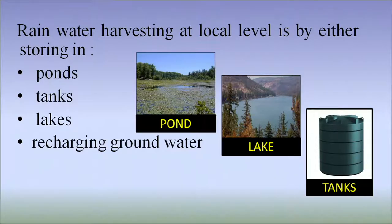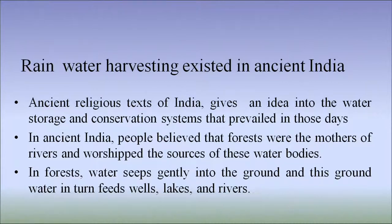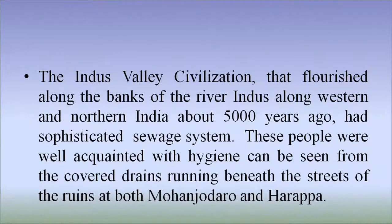Here you can see a picture of rainwater harvesting in the traditional way in ponds, lakes, tanks and recharging into groundwater. Ancient religious texts of India give an idea of the water storage and conservation systems that prevailed in those days. In ancient India, people believed that forests were the mothers of rivers and they worshipped the sources of these water bodies. In forests, water seeps gently into the ground and this groundwater in turn feeds wells, lakes and rivers. The Indus Valley civilization that flourished along the banks of the river Indus in western and northern India over 5000 years ago had a sophisticated sewage system. These people were well acquainted with hygiene, which can be seen from the covered drains running beneath the streets of the ruins of both Mohenjo-daro and Harappa.